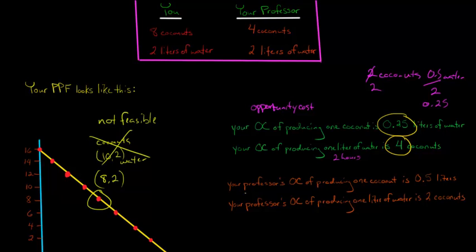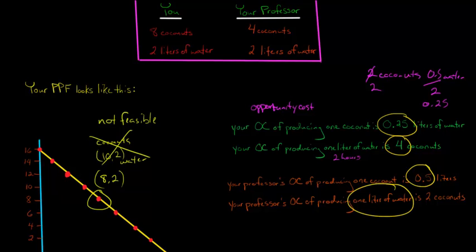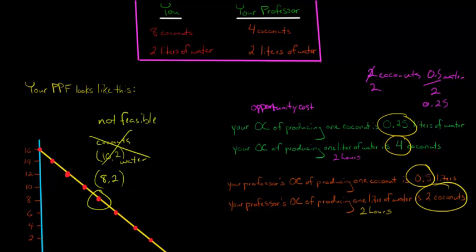Now we can do the same thing for your professor. Your professor's opportunity cost of producing one coconut: since he or she does one coconut per hour and half a liter of water per hour, to produce one coconut the professor is giving up half a liter of water — so 0.5 liters of water is the opportunity cost of one coconut. And conversely, the opportunity cost of one liter of water is two coconuts, because it takes the professor two hours to get one liter of water, and in those two hours they could have collected two coconuts at one per hour.